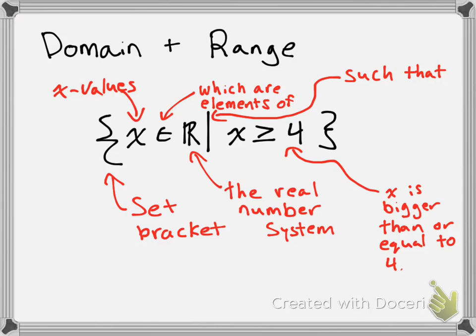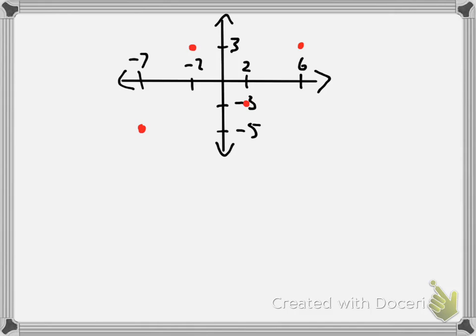That's how you write the notation. Now let's look at some specific examples of writing domain and range. Here I'm making a graph with several points on it — the points are in red. In this case, the domain and the range won't have an infinite number of points because as you can clearly see we only have 4 points on the graph. So when you have a scenario like this, you can actually just list out the x values for the domain and the y values for the range. Let's see how that looks.